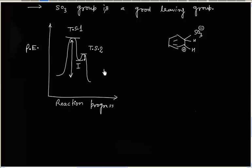In this lecture we discussed sulfonation of benzene. The main points are: SO₃ acts as the electrophile; sulfonation is reversible; the electrophile can be generated using H₂SO₄ as well. The role of SO₃ as electrophile is verified by the fact that when we use oleum, the rate of reaction increases.